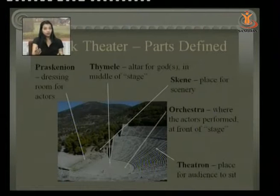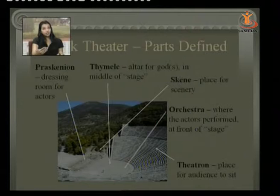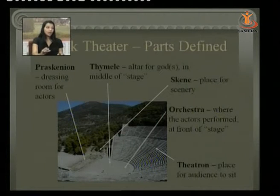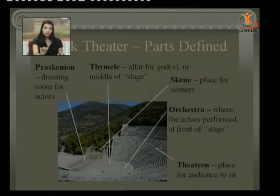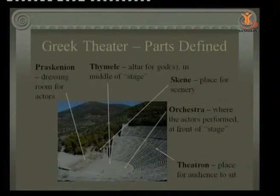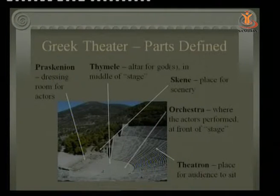To get more information on that, the dressing room for the actors would be in the Parakion — that square rectangular space being seen. Then we have Thimeli, the altar of gods, on the middle stage. If a god character appears in the drama, that would obviously be on the Thimeli section. We also have the Skene section, which is the place for scenery — whatever kind of scenes are to be enacted, they would be shown there.